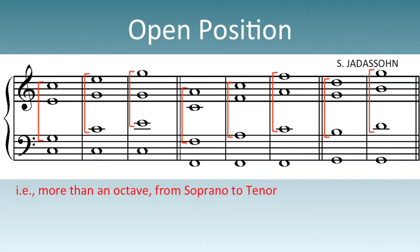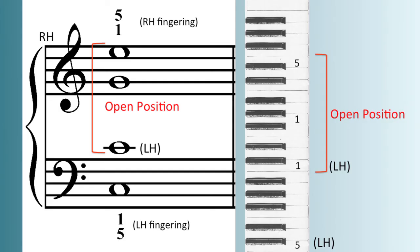When the soprano, alto, and tenor spread beyond an octave, we call that open position. Here is an open position chord as voiced on the piano keyboard. Notice how the tenor part is now played with the left hand along with the bass, while the right hand plays the soprano and alto notes.